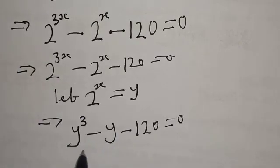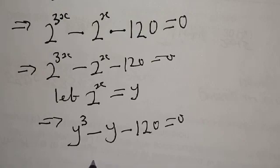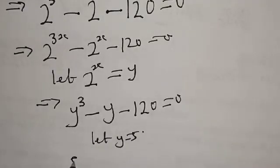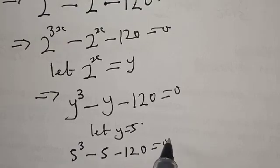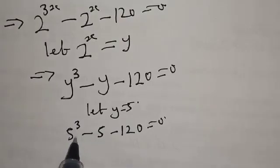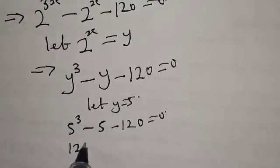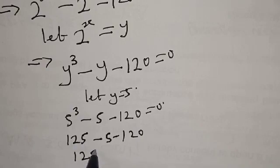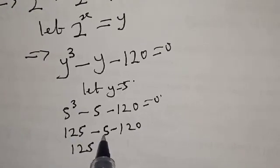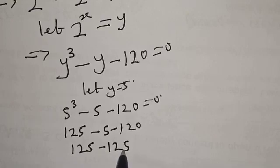So we have y raised to power 3 minus y minus 120 is equal to 0. Let's factorize. We need to get one of the roots. Let's say y is equal to 5. Then 5 raised to power 3 minus 5 minus 120 must equal 0. 5 raised to power 3 is 125, minus 5 minus 120 gives minus 125, and 125 minus 125 is equal to 0.